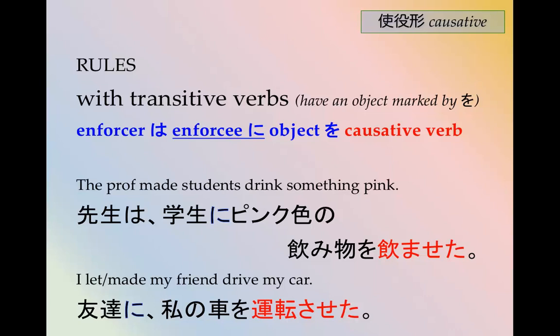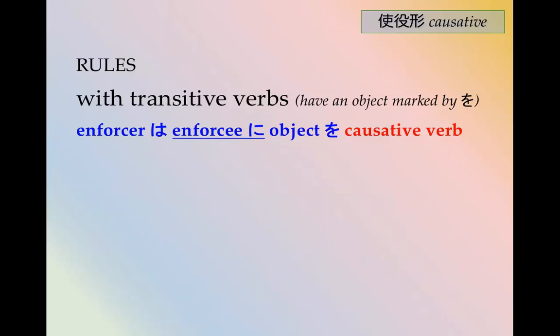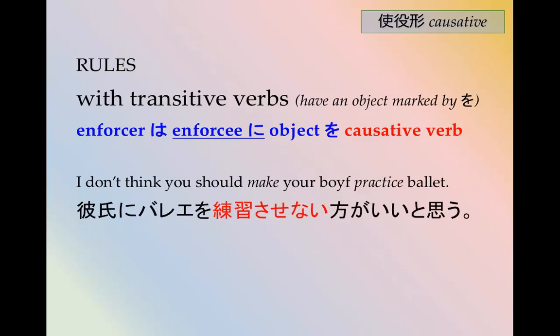We'll look at using giving and receiving verbs to be more specific about whether you're allowing or forcing someone to do something. For example: I don't think you should make your boyfriend practice ballet. 彼氏にバレーを練習させないほうがいいと思う。 This causative fits in with other grammatical patterns like ほうがいい — negative plus ほうがいい: I think it's better not to make him practice ballet.